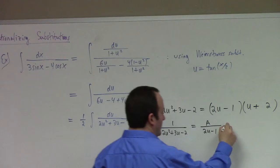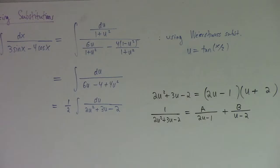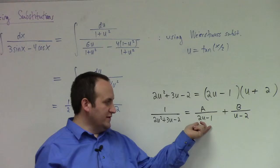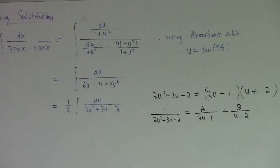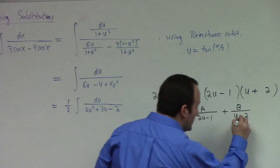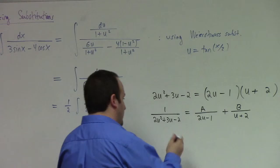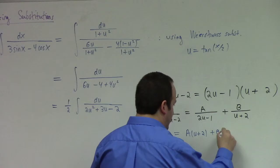For the partial fractions, what would be convenient is something like A over (2u minus 1) plus B over (u plus 2). I'll try it — it either works or it doesn't. If it works, great; if not, we can go back and factor out the 2 and deal with the ugly fractions. So 1 equals A(u plus 2) plus B(2u minus 1).